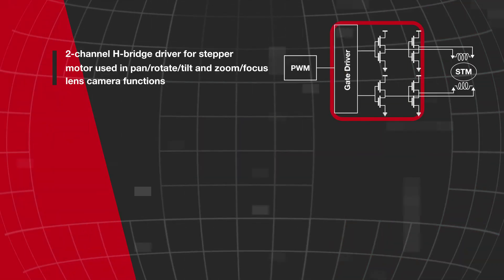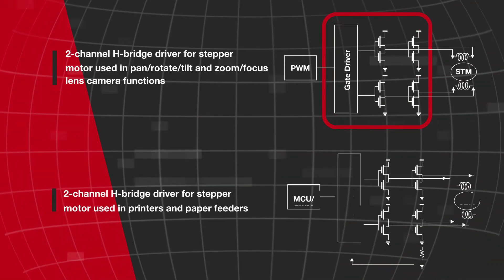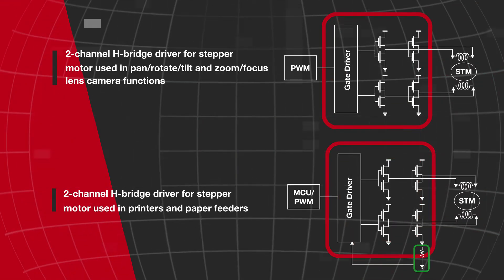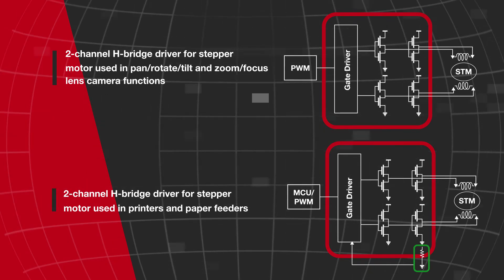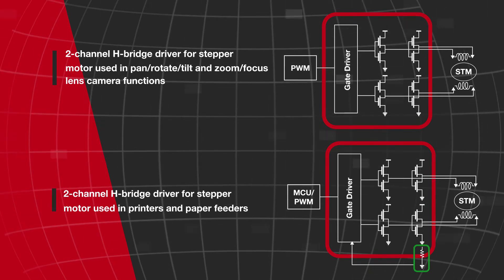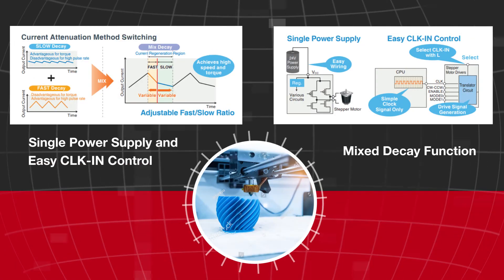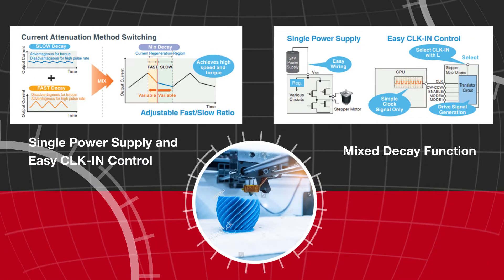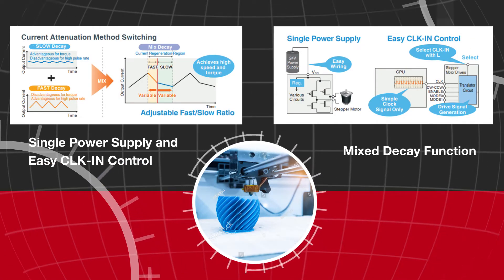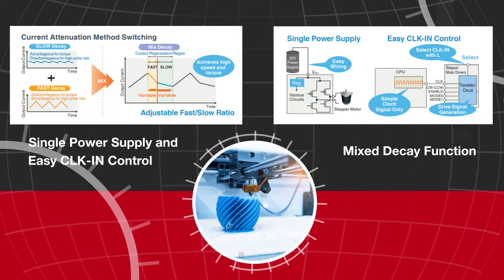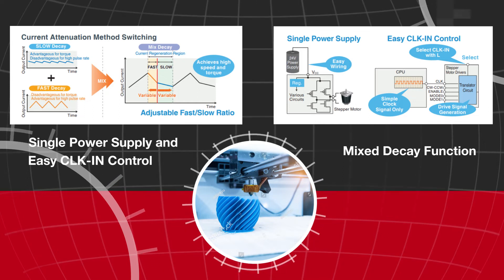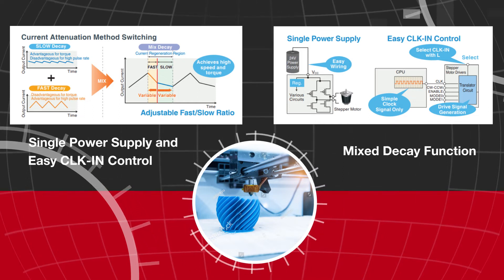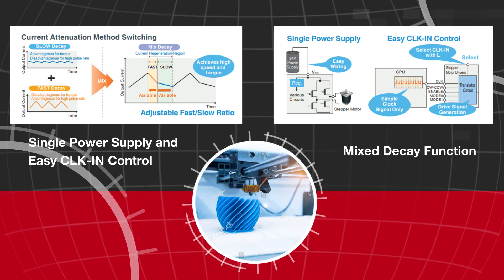Stepper motors typically leverage dual H-bridge drivers and require two power sources for the 5V control system and the 12V or 24V drive system. Methods to improve the quietness, control, and reliability of stepper motors include a mixed decay function that externally adjusts the ratio of slow and fast decay during current attenuation.